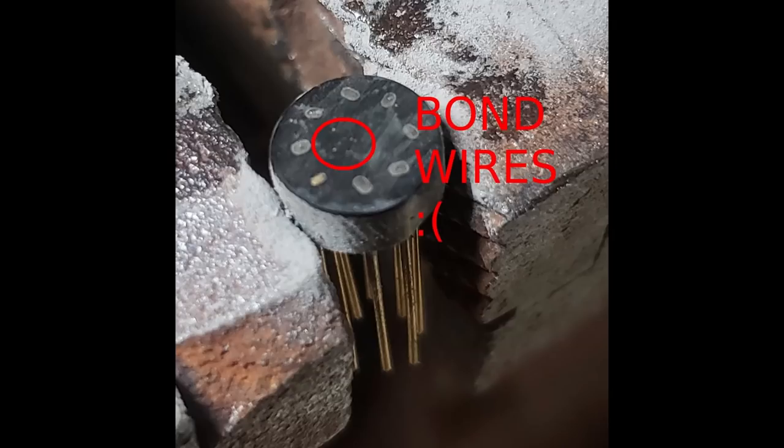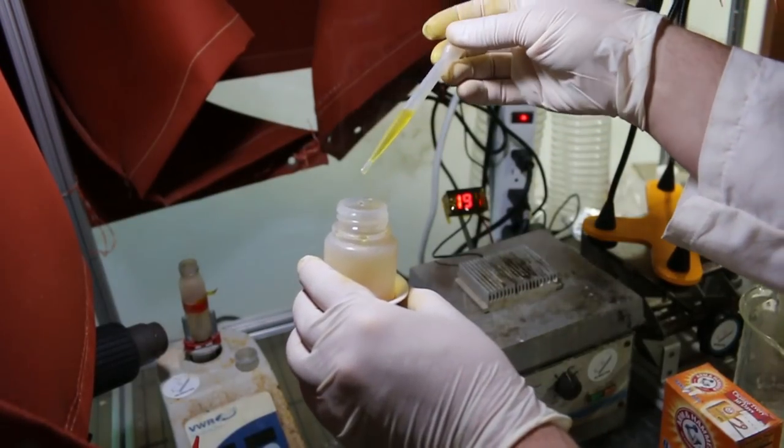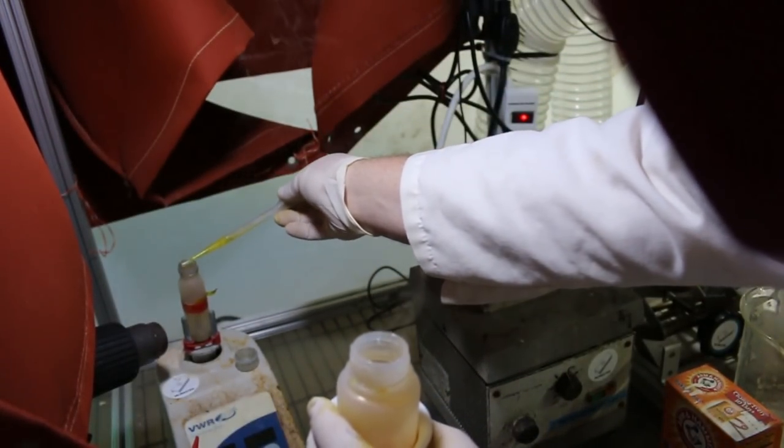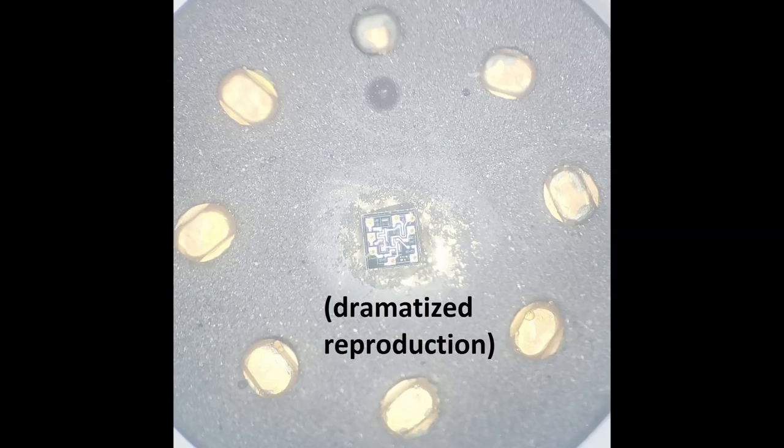Unfortunately, this severed the bond wires, so not a good approach. Next, I dropped a fresh one into hot white fuming nitric acid, WFNA for short, and vortexed it around until all of the epoxy dissolved. Unfortunately, this weakened the pins and subsequently resulted in broken bond wires from the pins rattling around.